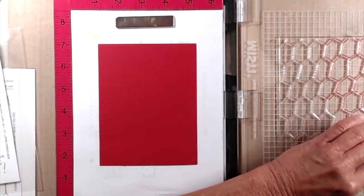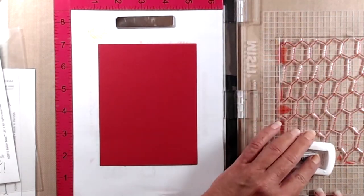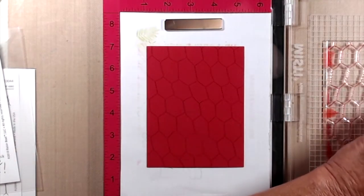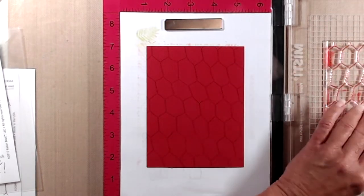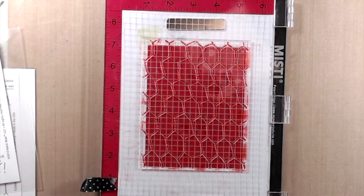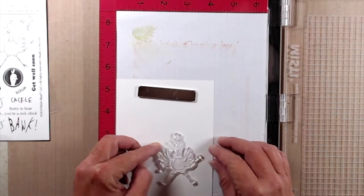For my first card I started with one of the pieces of red cardstock and I stamped the chicken wire background using rock and red ink from Katherine Pooler Designs. I stamped it twice to get a really nice crisp impression, although the stamp right out of the package stamped really crisp.